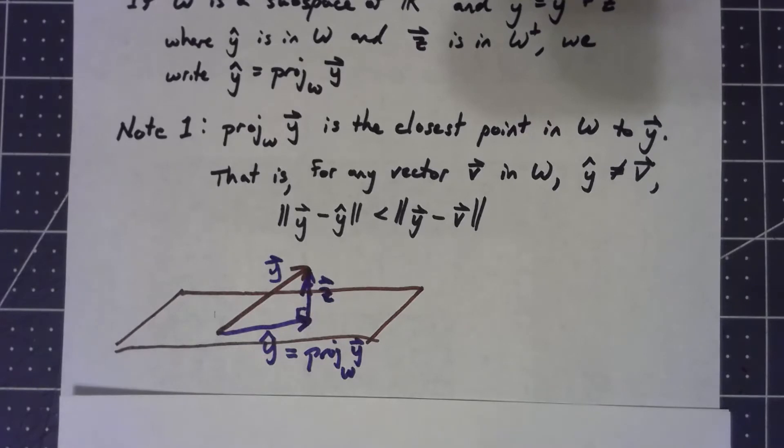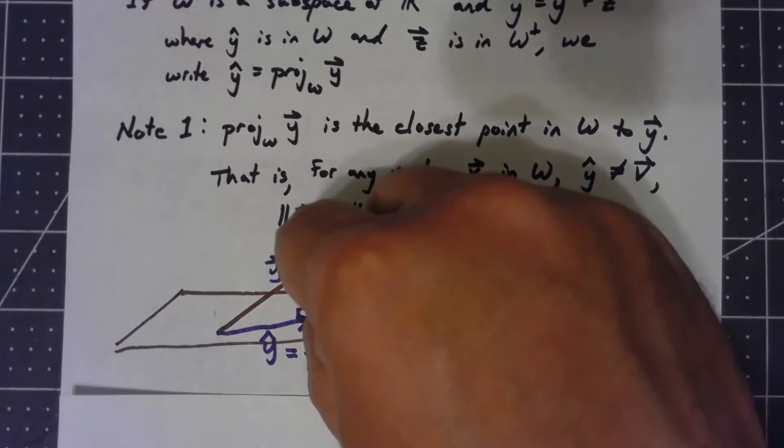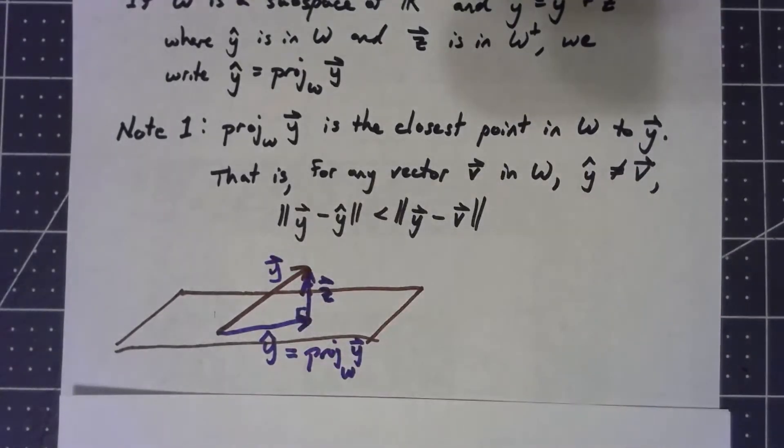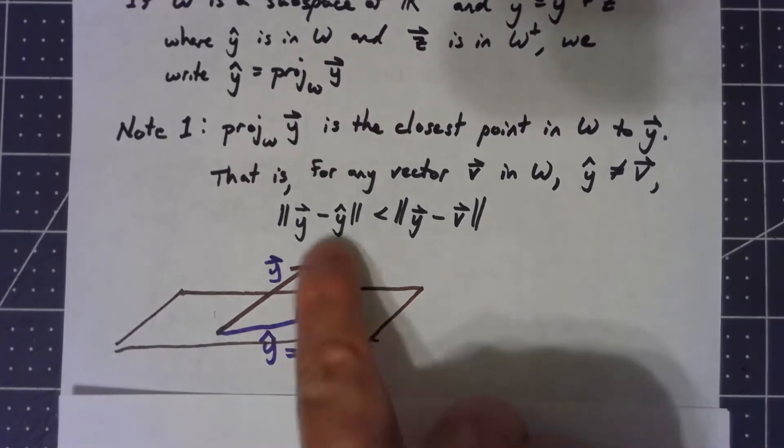That makes perfect sense that if we want to get as close as possible, we know that at a right angle that's going to give us the closest distance.